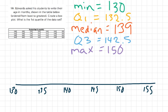Great. So now I have my five values here that I need to create my box plot. So let's start out by plotting the minimum, which is 130. So I'm just going to draw a line for that here.